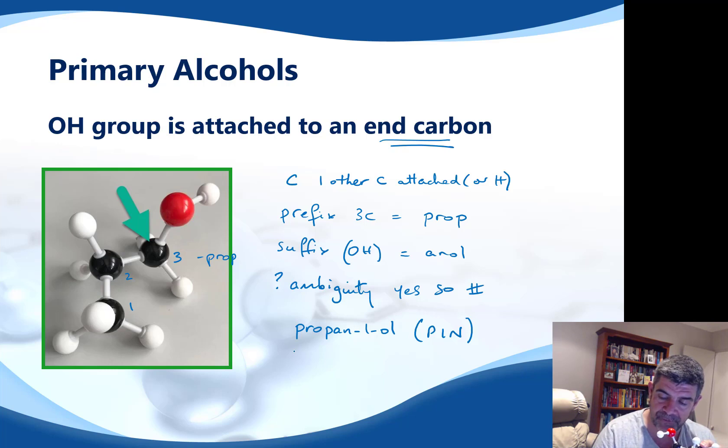But for reasons that will become more and more obvious as we increase the number of functional groups that we know, putting the number near the functional group at least as close as you can. We often call this a locant, because it basically locates the position of our functional group. So the number is just there to tell us where it is. Because this is on an end carbon, it is a primary alcohol. But we have two other groups to look at.